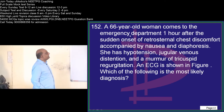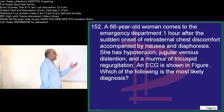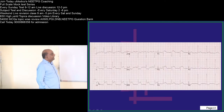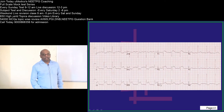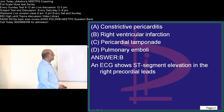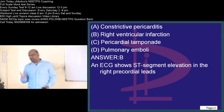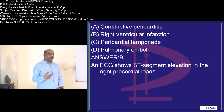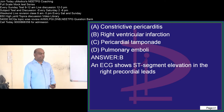A 66-year-old woman comes to the emergency department. Her JVP is elevated, there is a tricuspid regurgitation murmur, and the ECG shows ST-segment elevation in the right precordial leads V1 and V2 — this is a case of myocardial infarction. You should suspect a right ventricular infarction: V1 and V2 are right precordial leads, V5 and V6 are left precordial leads, and V3 and V4 are septal leads.